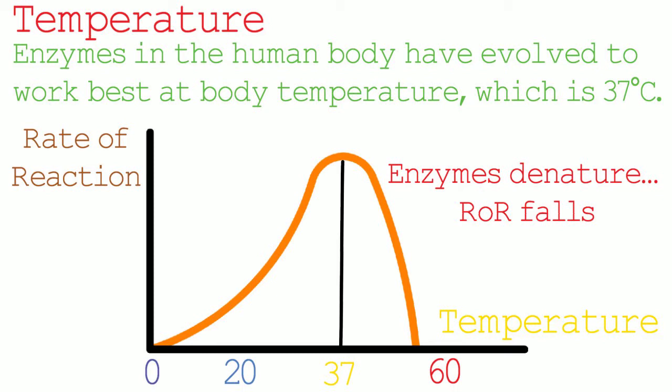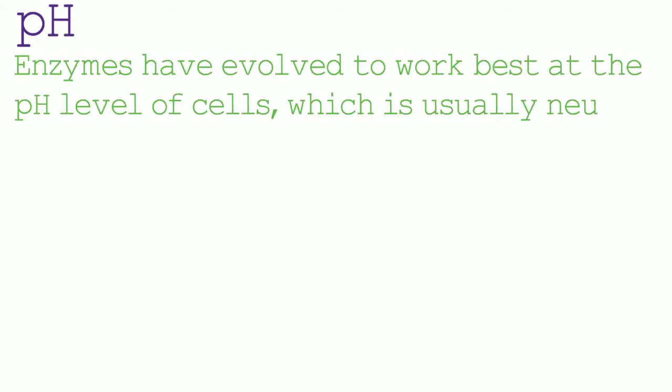In addition to temperature, enzymes are also affected by pH. Enzymes have evolved to work best at the pH level of the cells that they are operating in, which is usually neutral — a pH of 7. If the pH level is above or below this, the rate of reaction will fall. The rate of reaction falls because the pH interferes with the bonds holding the enzyme together.